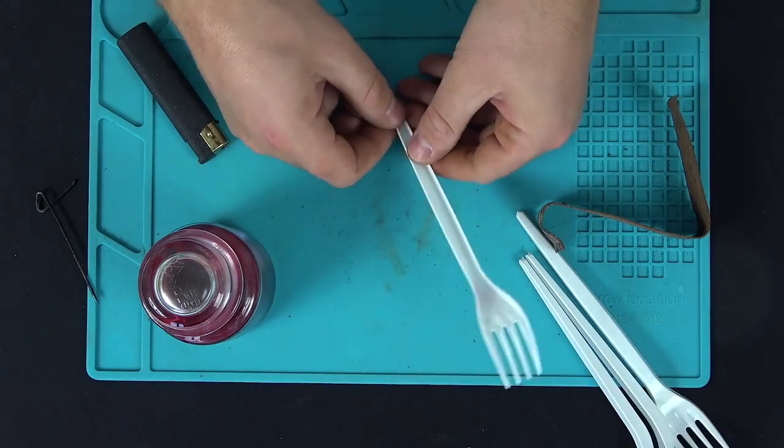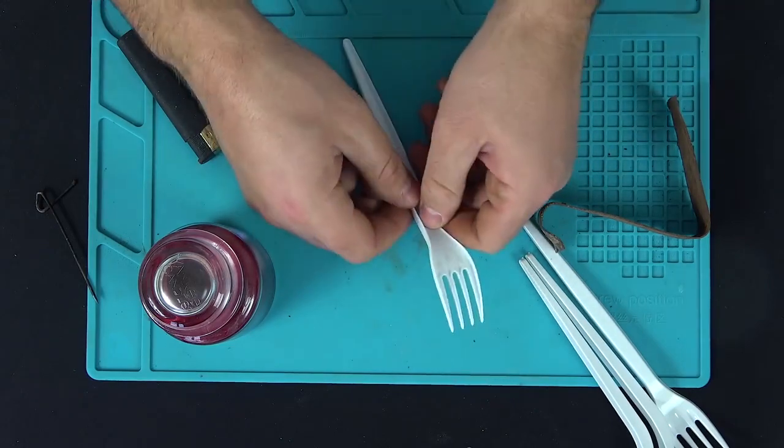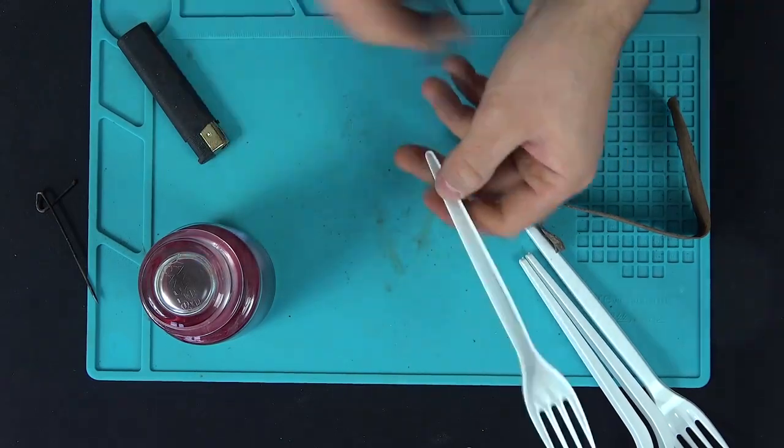First of all, we need to divide the fork handle into small strips. This can be done manually by simply breaking them off or using scissors.